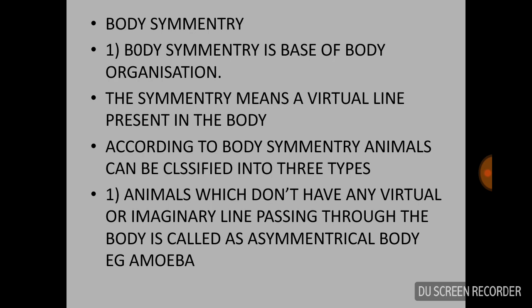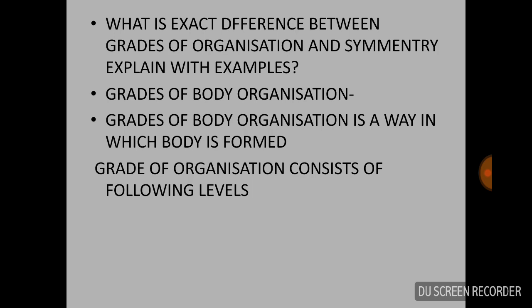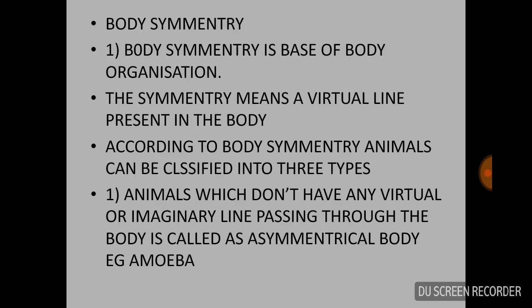Now, body symmetry. Body symmetry is related to body organization. The difference is that grades of body organization is the way in which the body is formed, while body symmetry refers to an imaginary line present in the body. Symmetry means an imaginary line through which we can cut an animal into two equal halves.